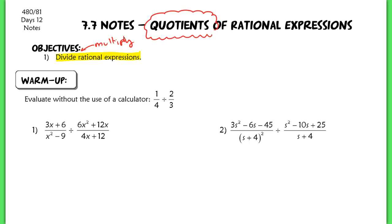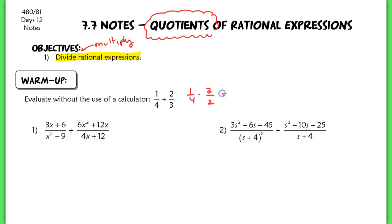To demonstrate why you're really just multiplying expressions, consider how to divide one-fourth by two-thirds. Without a calculator, we would just take the reciprocal of two-thirds — so three-halves — and multiply one-fourth by three-halves to get three-eighths. So this is exactly like what we were doing yesterday.